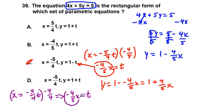Now we can replace t with negative 4 fifths x. So we end up with y equals 1 minus 4 fifths x, which does match, does in fact match this problem. So D is going to be our correct answer.